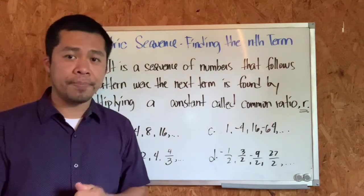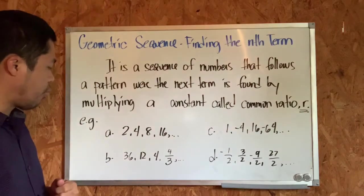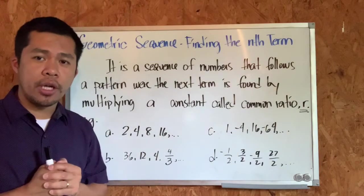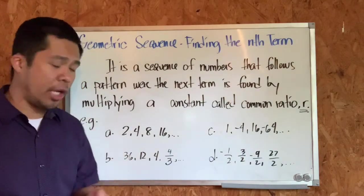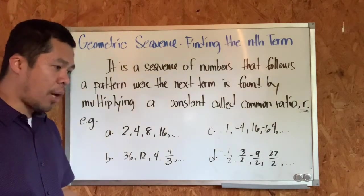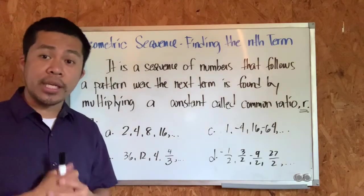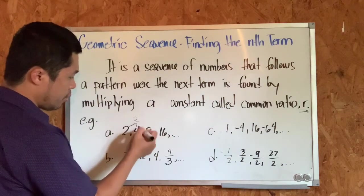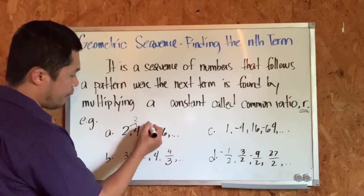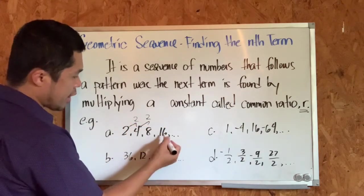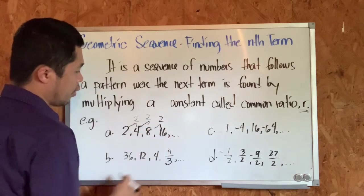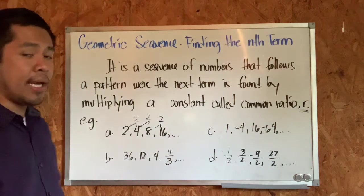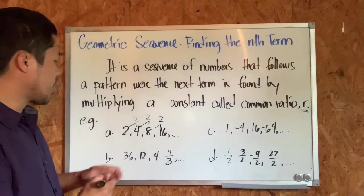So for a sequence to be considered geometric, there should be a common ratio. For example, in letter A we have the sequence 2, 4, 8, and 16. The first thing we need to do is check the common ratio. To find it, we divide any two succeeding terms: 4 divided by 2 equals 2, 8 divided by 4 equals 2, and 16 divided by 8 also equals 2. Since all ratios are equal, that is why it is called the common ratio.